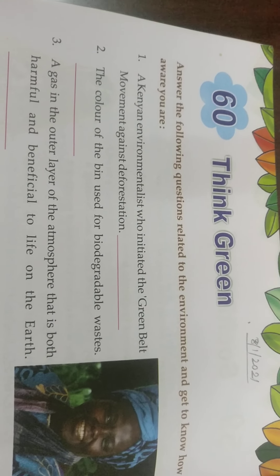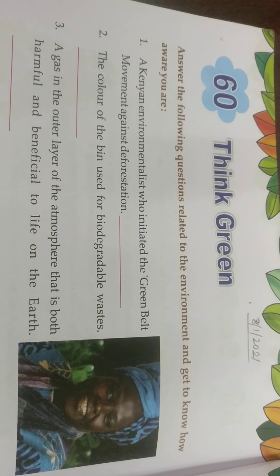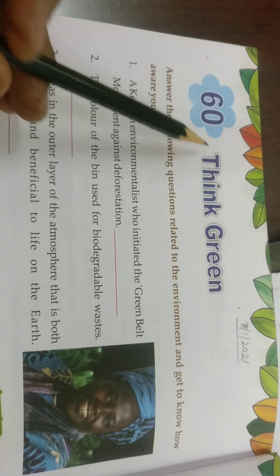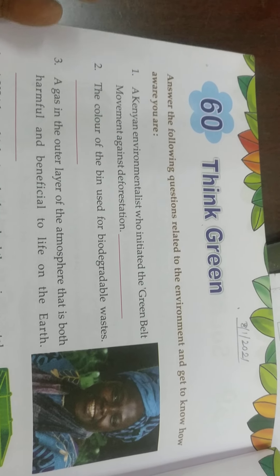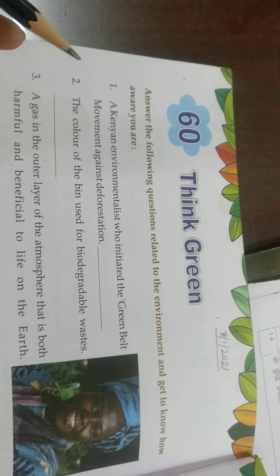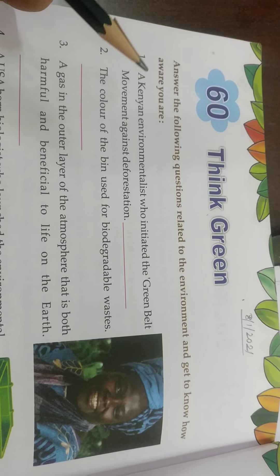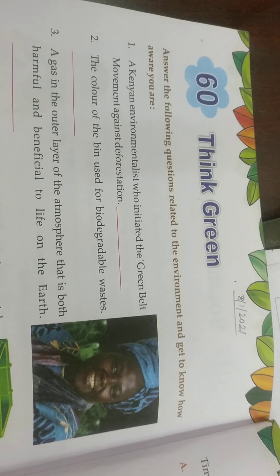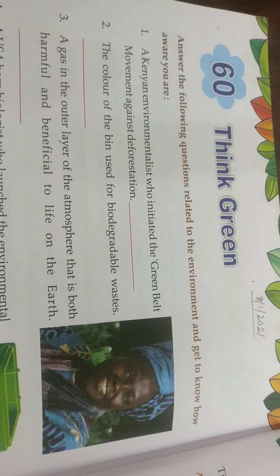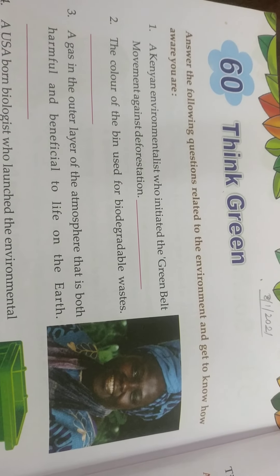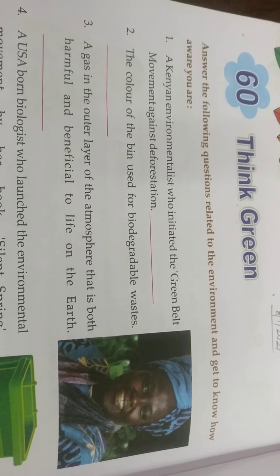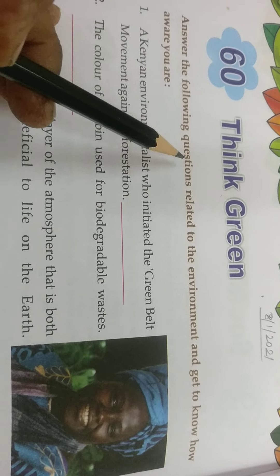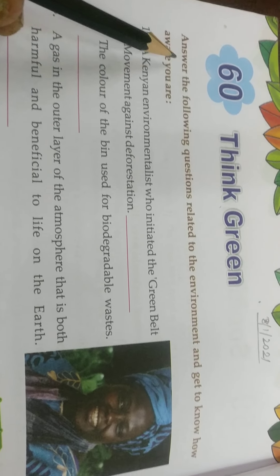Hello, good morning students of class 7. How are you? Hope you're all fine. I'm on chapter number 60 of your GK books: Think Green. Think Green basically means that we are aware and sensitized towards our environment, and we commit ourselves to preserve this environment, reduce pollution, make it greener, avoid deforestation, promote afforestation, and so on. Use limited water, etc. So let us see on this page what unfolds for you. Answer the following questions related to the environment and get to know how aware you are.